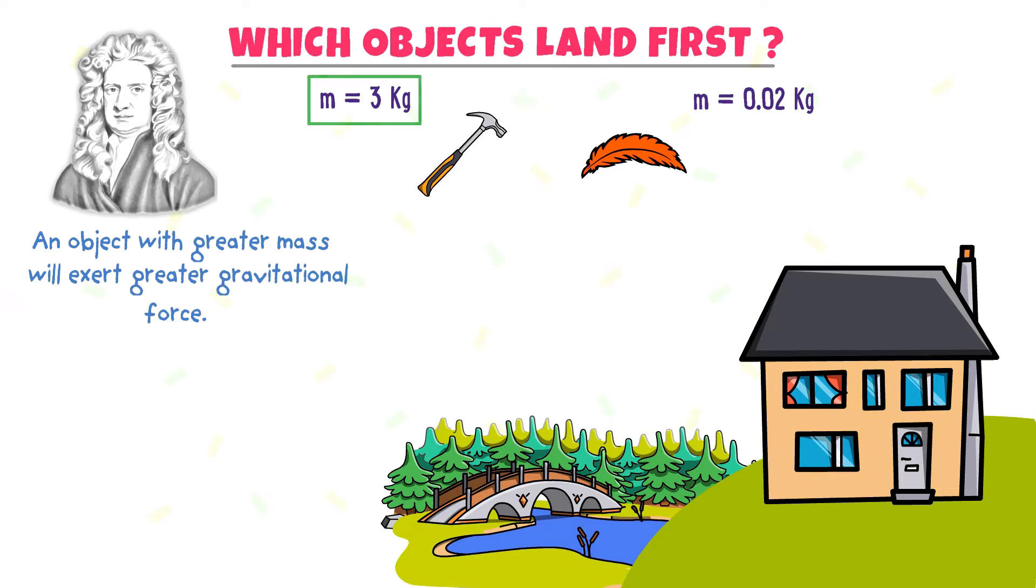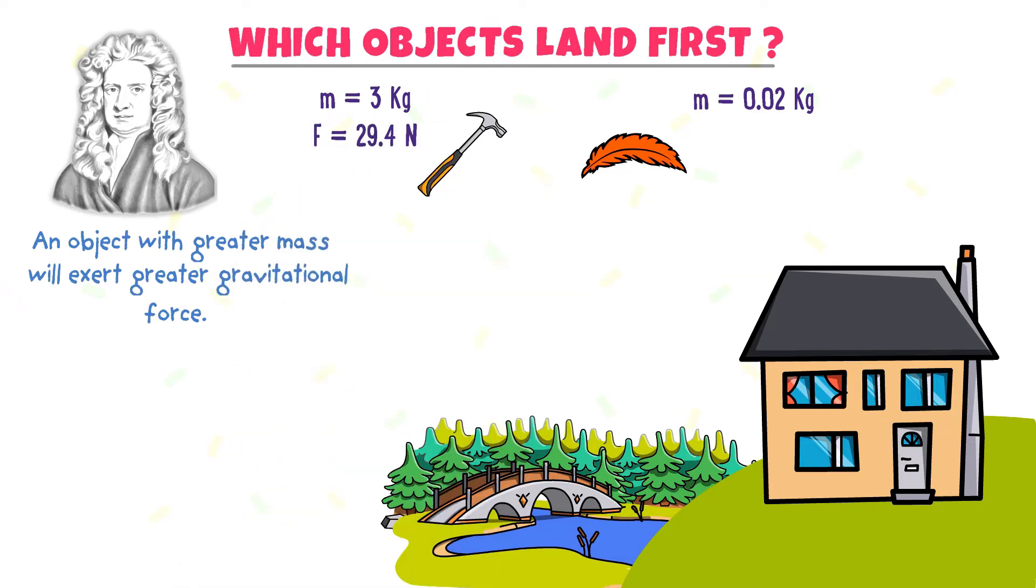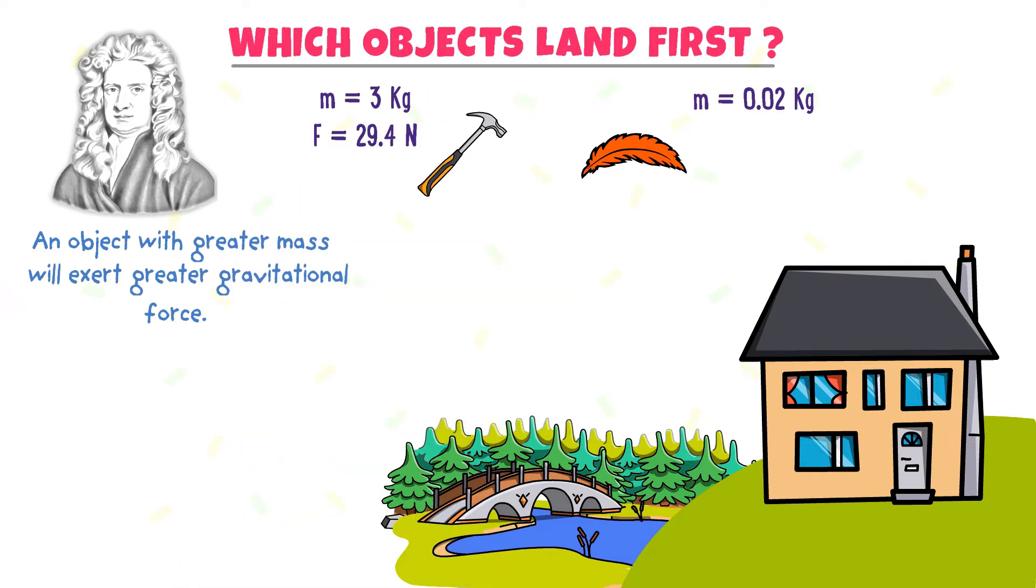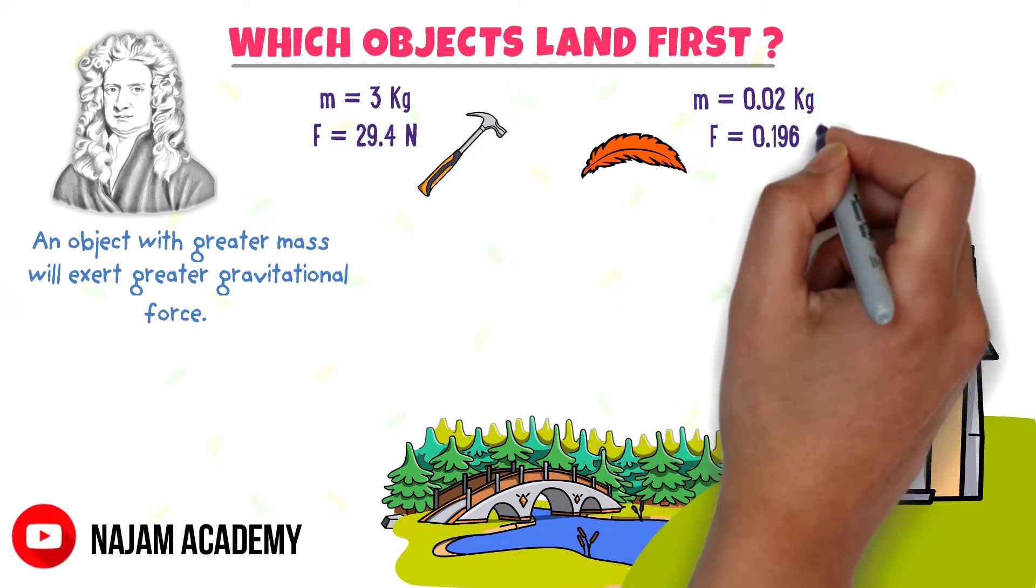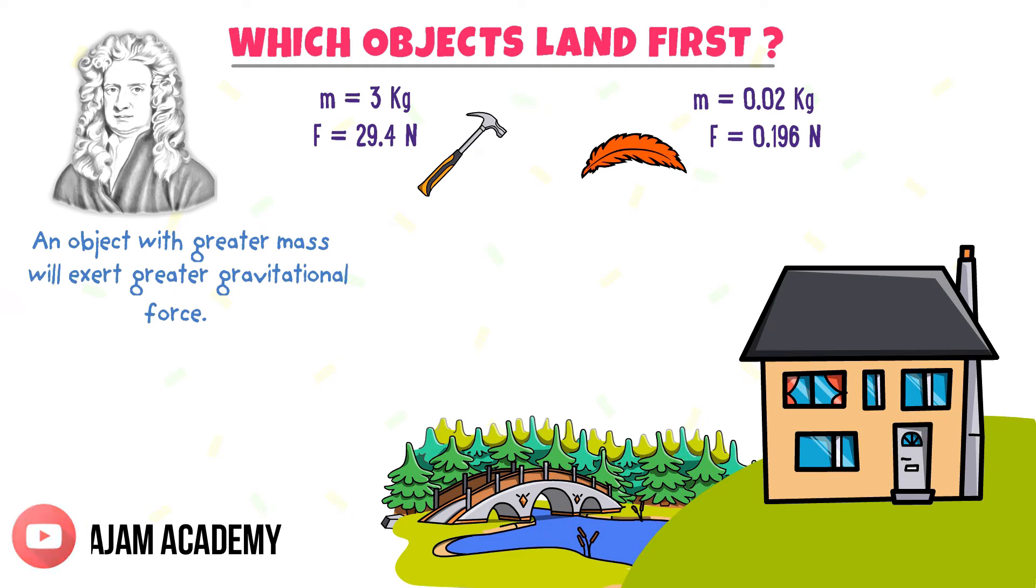Let it experience a greater force, F is equal to 29.4 N. The mass of the feather is smaller. Let it experience a smaller force, F is equal to 0.196 N.